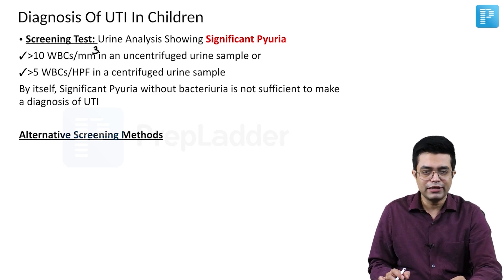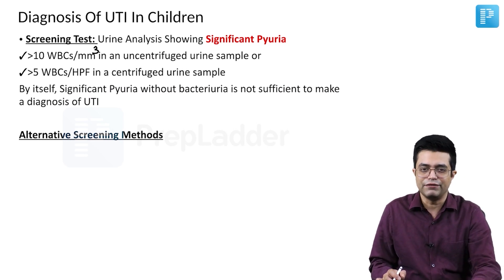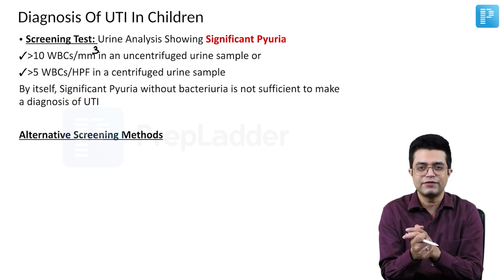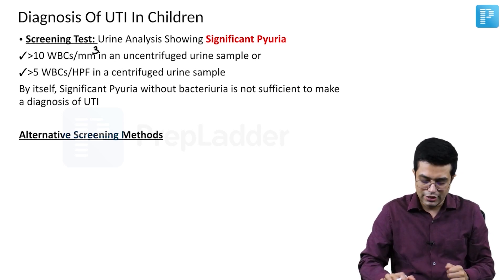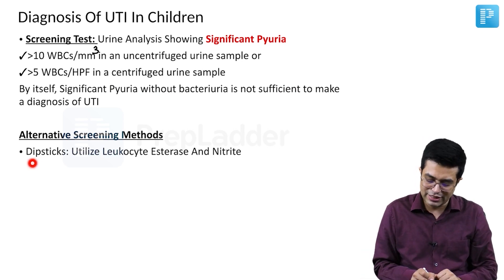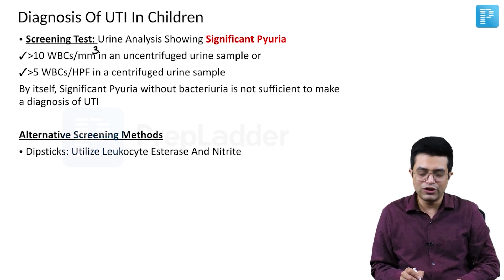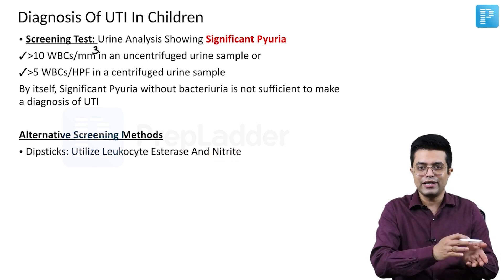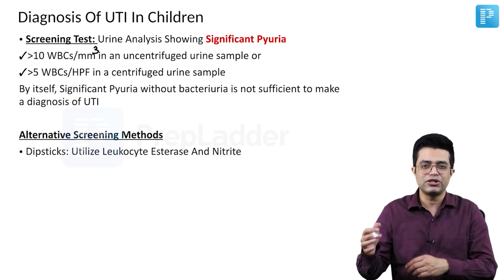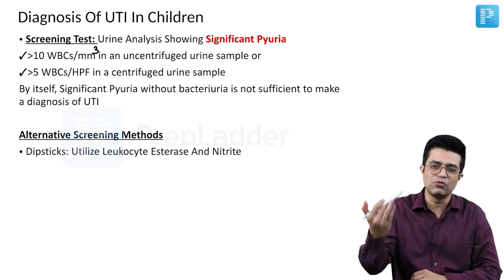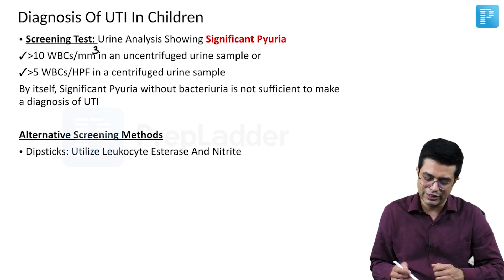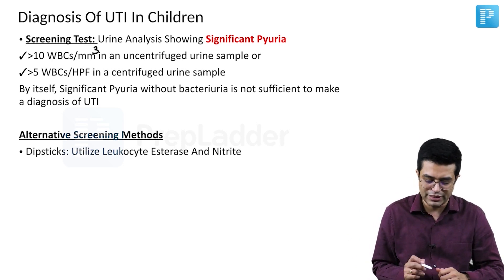What are the alternative screening methods? They are slightly more costly but have better sensitivity — overall modest sensitivity and specificity, but better than pyuria alone. These are dipsticks, which employ two agents: leukocyte esterase and nitrite. Nitrate-to-nitrite conversion is performed by most gram-negative bacteria that cause UTI, so these will test positive for nitrite.